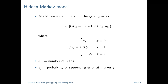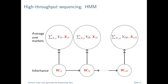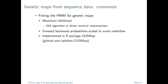In practice, since genotypes are discrete — taking only values 0, 1, or 2 — we average over the genotypes to collapse down to a typical HMM structure where observed reads y are conditional on inheritance vectors w. From there we can use all the standard HMM tools. We can fit the model with maximum likelihood, either through an EM algorithm or direct numerical maximization. Timothy implemented this in an R package called GUSMap, freely available through GitHub.